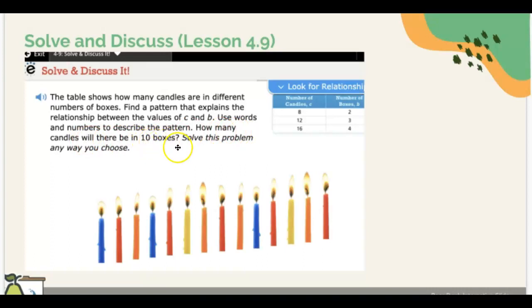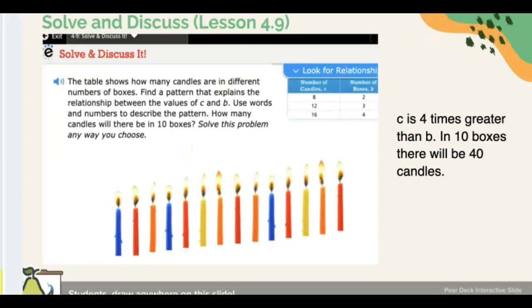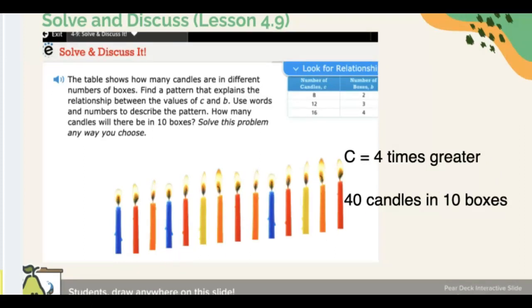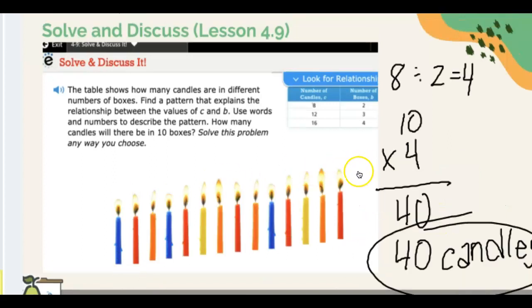How many candles will there be in 10 boxes? Let's see your answers. Winnie said that c is four times greater than b, so in 10 boxes there will be 40 candles. Tiffany Chan also said c equals four times greater, so 40 candles in 10 boxes.